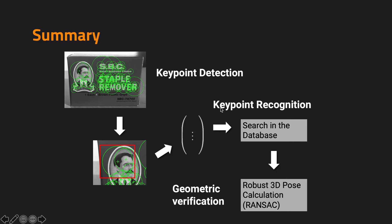In summary, in this tracking by detection scheme, we first detect key points and then build descriptors for those key points. We can then search in the database of key points representing the target, and use geometric verification — basically RANSAC together with a transformation hypothesis — to figure out which matches are correct. If you have a 2D template or 2D target, it is easy to use a homography to represent your transformation without reconstructing the full 3D information of your template.